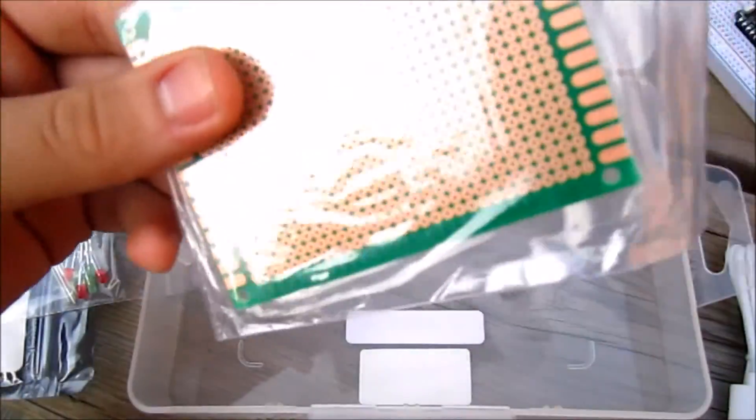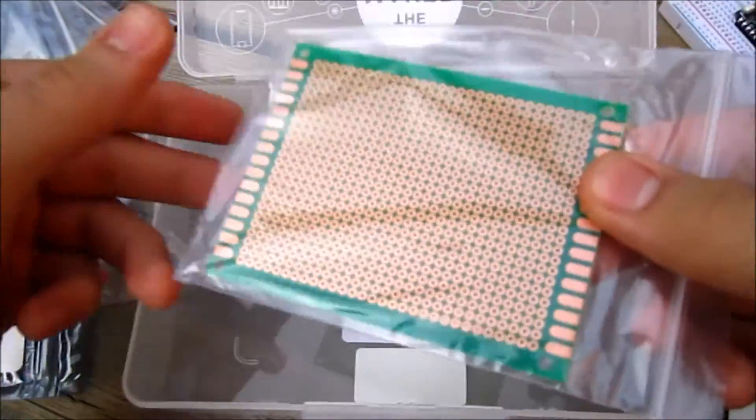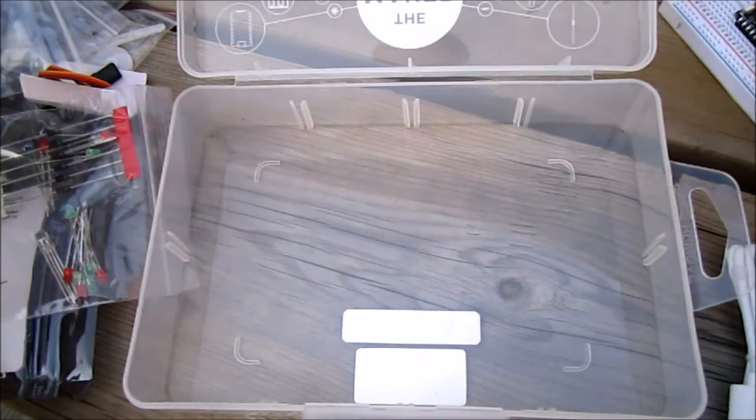The last thing inside the box is a protoboard. This is a dot matrix protoboard right here. And that's basically it.